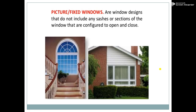The fixed window: these are windows designed that do not include any sashes or sections configured to open and close. Fixed windows are generally provided for the purpose of light only — for getting light from outside to the inside. These cannot be opened or closed at any side. The fixed window is generally used for the purpose of lighting into the building, with no opening mechanism.